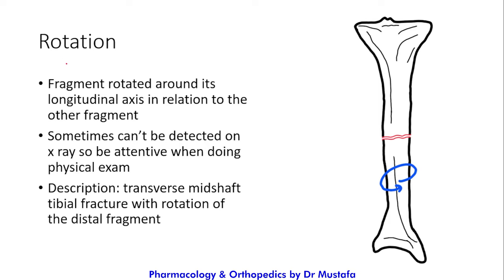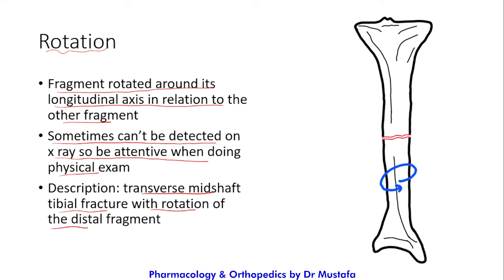The third pattern of displacement is rotation, where the fragments rotate around their longitudinal axis in relation to each other. Sometimes rotation cannot be detected on X-ray, so be attentive when performing the physical exam. An example description would be: 'transverse mid-shaft tibial fracture with rotation of the distal fragment.'